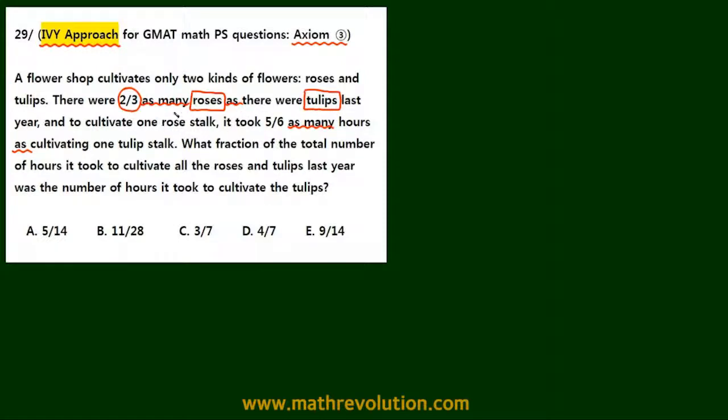Now in the second bit, we have roses and 5/6, and then 'as many as', and then the subject tulips.